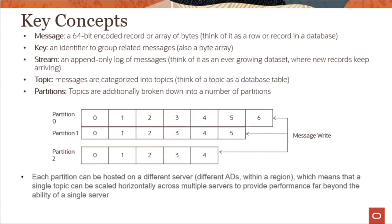Partitions allow you to distribute streams by splitting messages across multiple nodes, enabling you to scale your streaming service. Each partition can be placed on a separate machine to allow multiple consumers to read a stream in parallel, regardless of where the partition is hosted. Each message within a stream is marked with an offset value, so if a consumer is reading a message and there is some interruption, it can pick up where it left off.